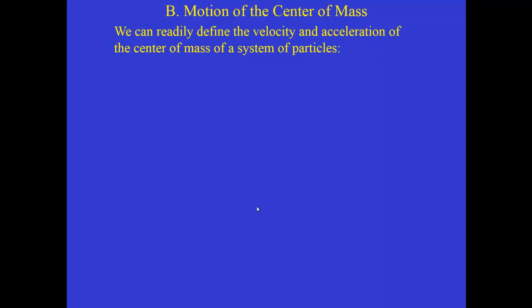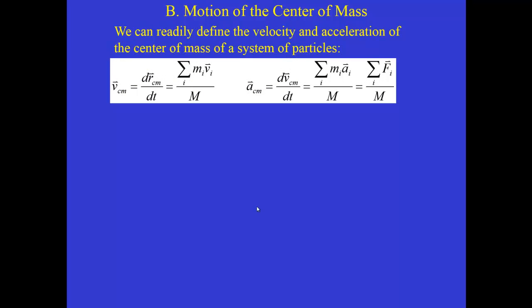What about the motion of the center of mass? We can take our definition of the center of mass position and calculate the velocity and acceleration for the entire system. The velocity of the center of mass is given by differentiating the position of the center of mass, so each term in the summation — originally mass times position — becomes mass times velocity. Differentiating once more gives the acceleration of the center of mass, where each term becomes mass times acceleration.